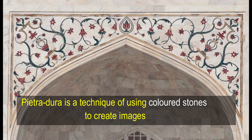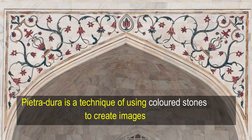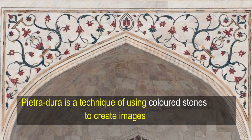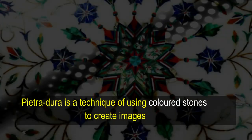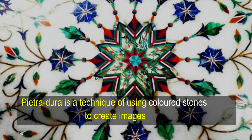Mughal architecture reached its zenith during the reign of Shah Jahan. One of the most significant contributions of this period is Pietra Dura, which is a technique of using cut and fitted, highly polished colored stones to create images.